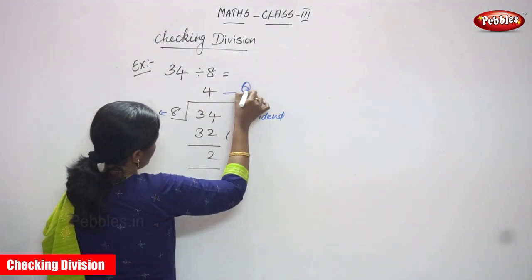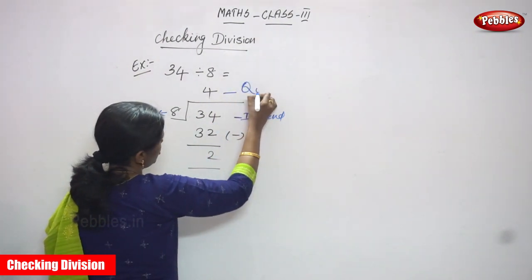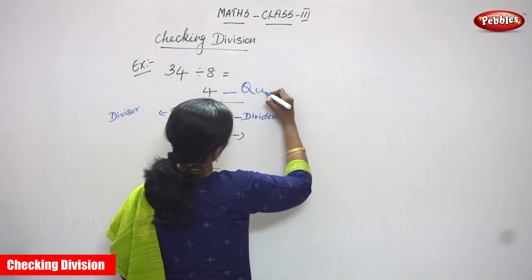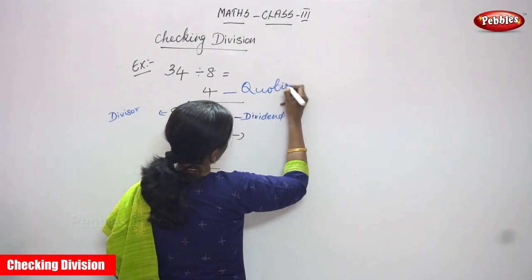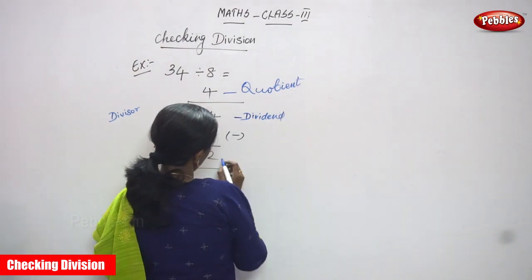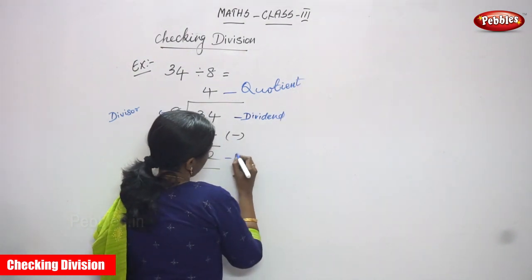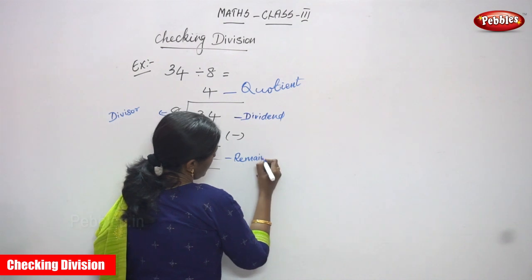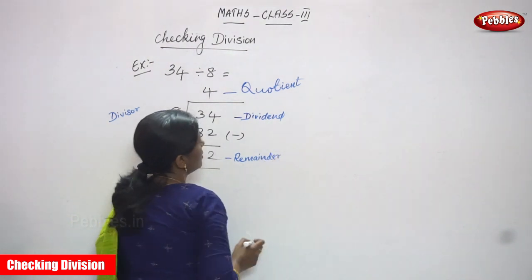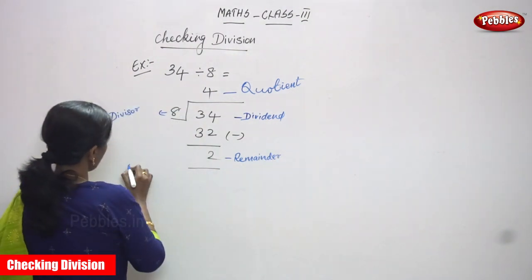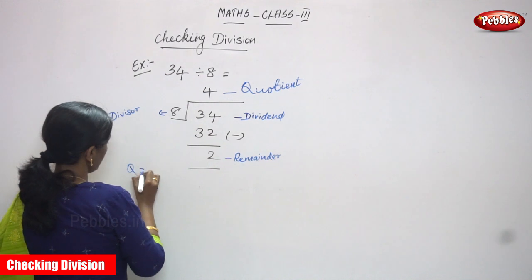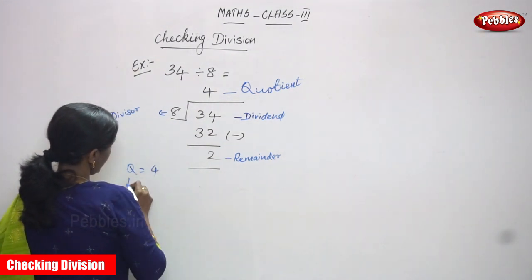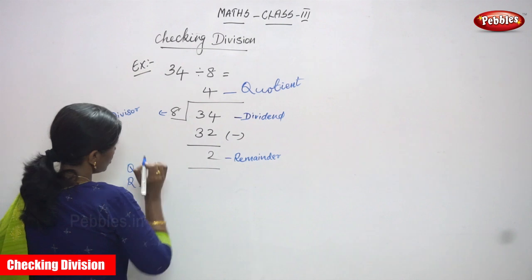So this is a quotient and this is a remainder. The quotient is 4, and the remainder is 2.